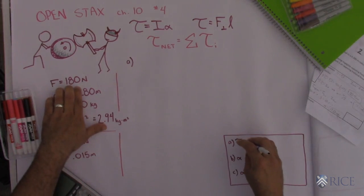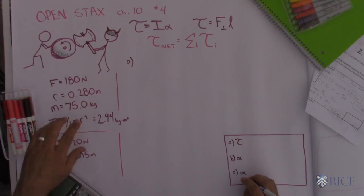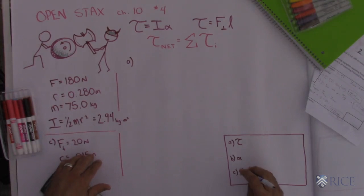One, what's the net torque applied and two, the angular acceleration. In part C, they add a small frictional force and we have to find the angular acceleration again. All right, so I would start like this.